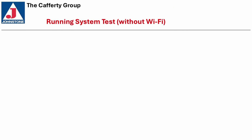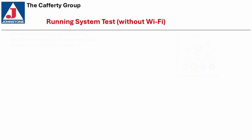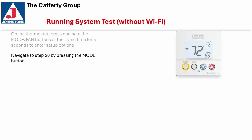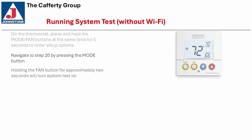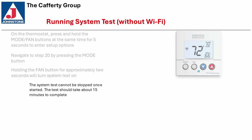Running System Test Without Wi-Fi: on the thermostat, press and hold the mode and fan buttons at the same time for 5 seconds to enter setup options. Navigate to step 20 by pushing the mode button. Holding the fan button for approximately 2 seconds will turn the system test on. The system test cannot be stopped once it's started. The test should take about 15 minutes to complete.